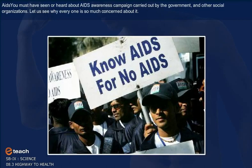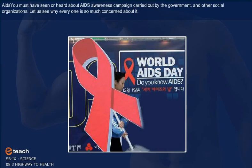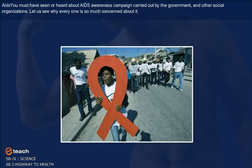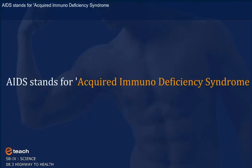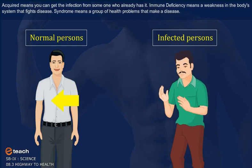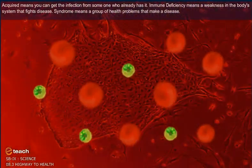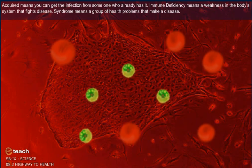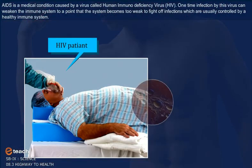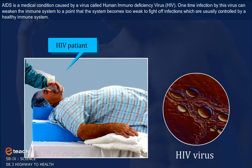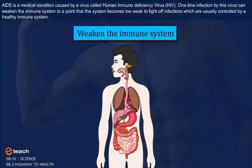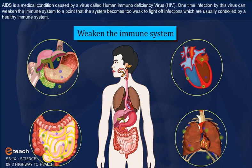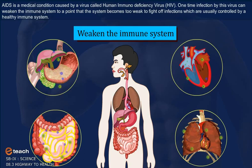AIDS stands for Acquired Immunodeficiency Syndrome. 'Acquired' means you can get the infection from someone who already has it. 'Immune deficiency' means a weakness in the body's system that fights disease. 'Syndrome' means a group of health problems that make up a disease. AIDS is a medical condition caused by a virus called Human Immunodeficiency Virus, i.e. HIV. Infection by this virus can weaken the immune system to the point where it becomes too weak to fight off infections normally controlled by a healthy immune system.